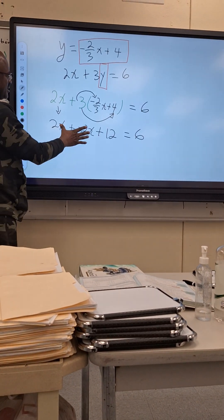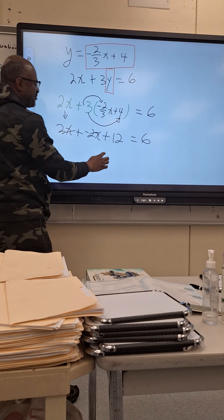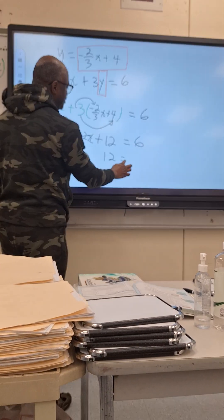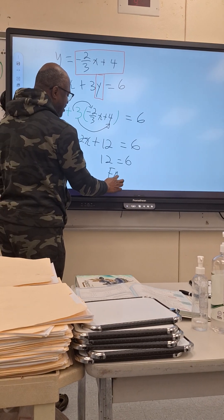What happened here? If x cancel each other out, this cancel with that. Then I will have 12 is equal to 6. Is that a true statement? No. That's a false statement. In this case what will happen.